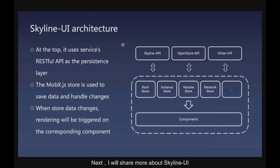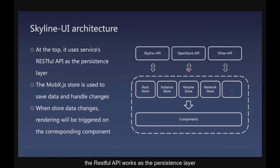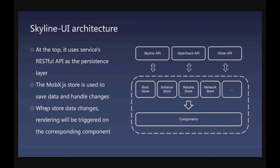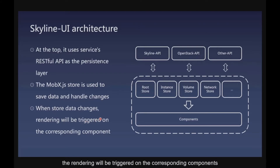Now I will share more about Skyline UI. As the picture shows, the RESTful API works as a persistence layer. The MobX store is used to save data and handle changes — including the root store, instance store, volume store, and so on. When data in the store changes, rendering will be triggered on the corresponding component.